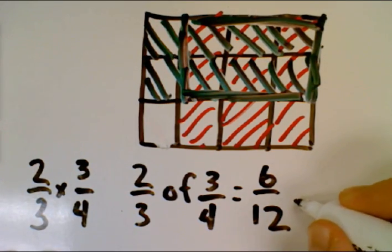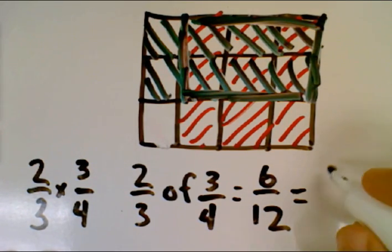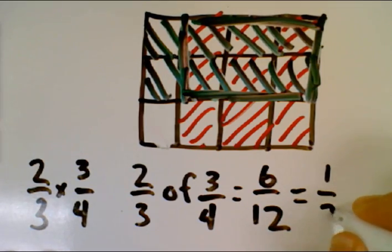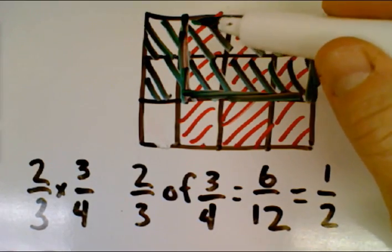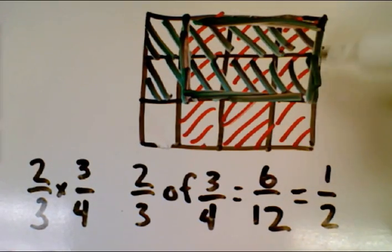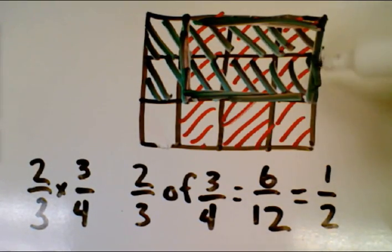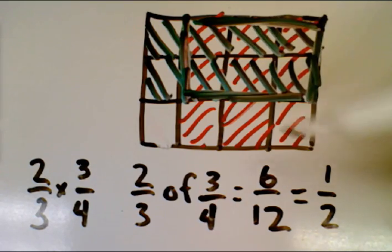So our multiplication is six-twelfths. Or if you do some reduction there, you'll get one-half. And you can actually see that, not in this orientation, but when you do six oriented this way, you get one-half of the whole.